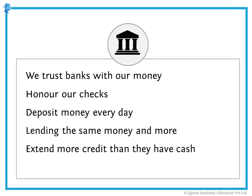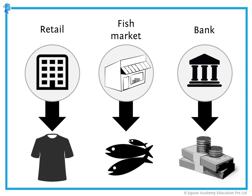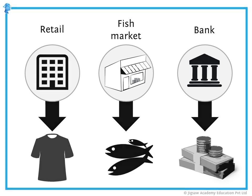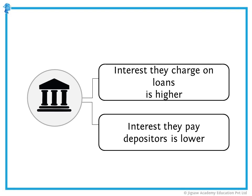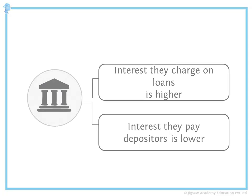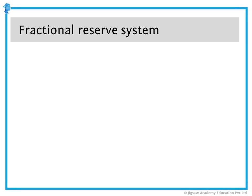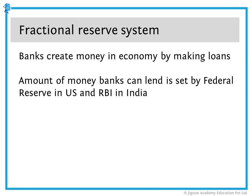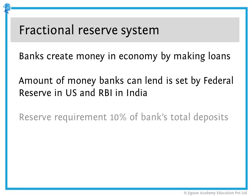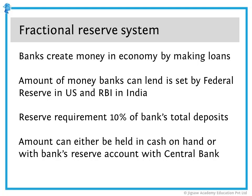Banks consistently extend more credit than they have cash. Banks are just like other businesses — their product just happens to be money. They sell money in the form of loans, certificates of deposit, and other financial products, and they make money on the interest they charge on loans. The fractional reserve system is how banks make money. Banks create money in the economy by making loans. The amount of money that banks can lend is set by the Federal Reserve in the U.S. and the RBI in India. The reserve requirement is, say, 10% of the bank's total deposits, held in cash on hand or with the bank's reserve account with the central bank.